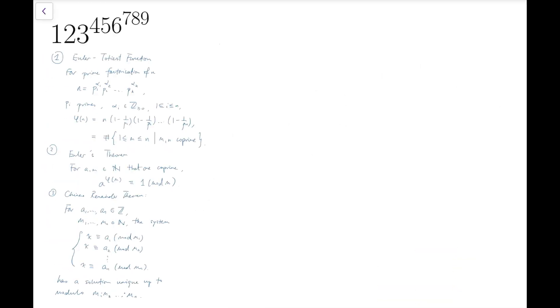Before I begin, let me introduce to you the tools that we are going to use in this problem. The first one is the Euler-Totient function, mapping natural numbers n to the number of integers between 1 and n that is coprime with the number n.